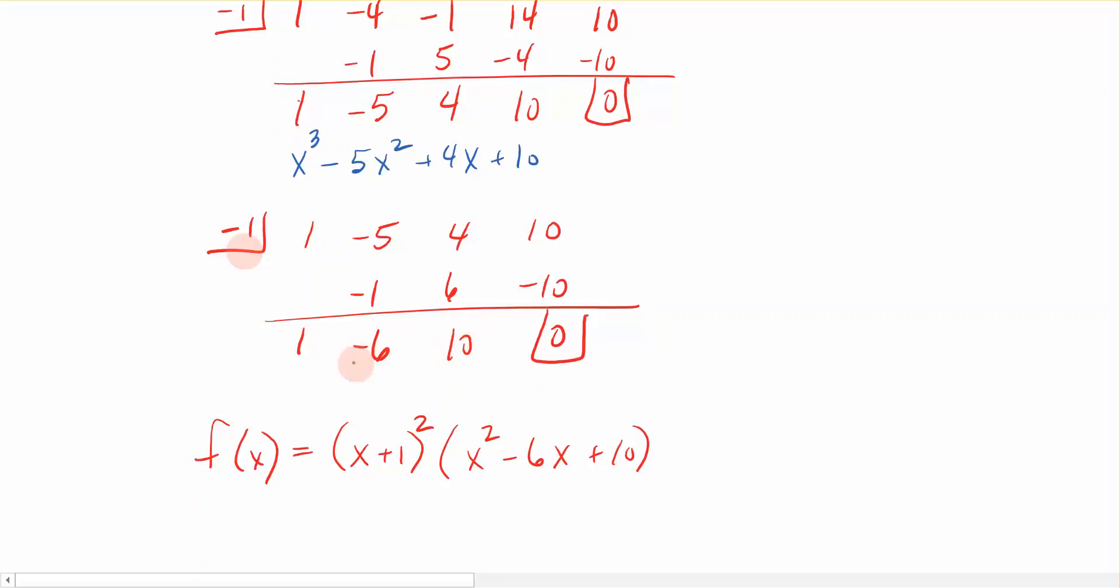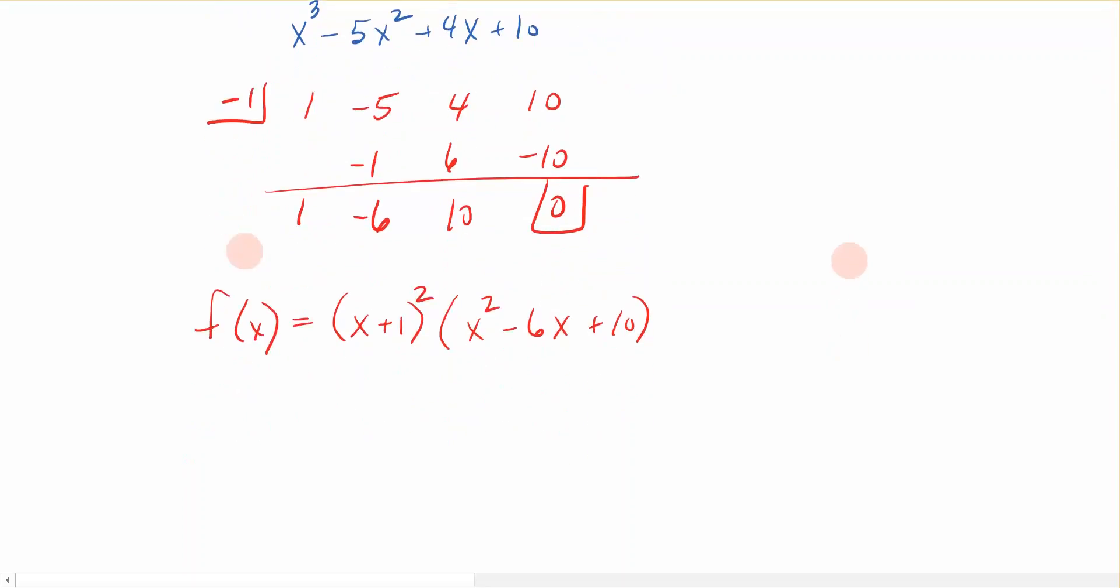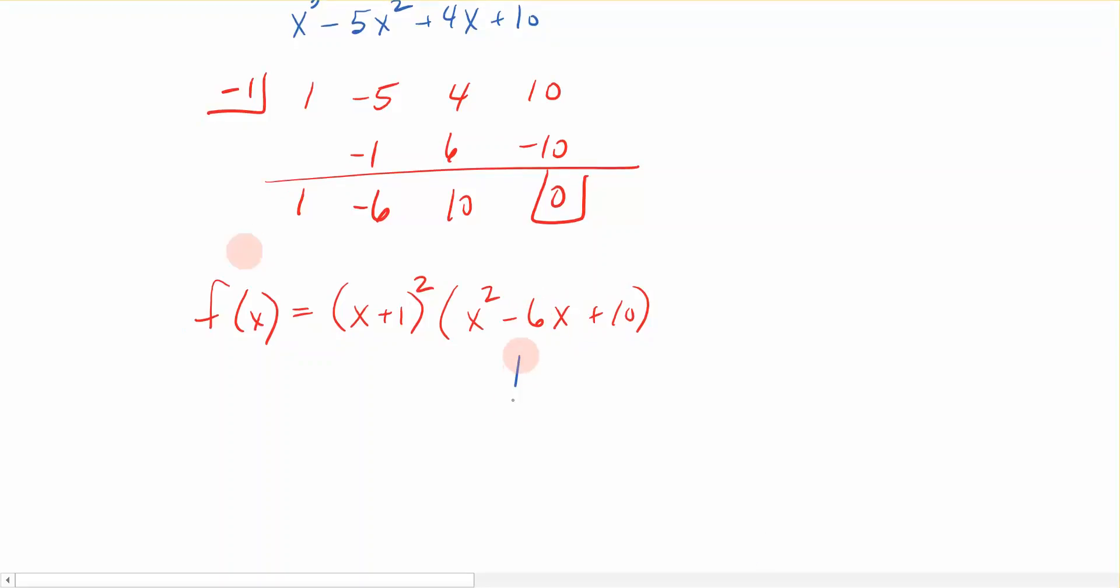Because this is a quadratic, I can either try to factor it or I can use the quadratic formula. Well, if I'm trying to factor this, I would be looking for the factors of 10 that add to give me 6. There are no factors of 10 that add to give me 6. So instead I'm going to have to use the quadratic formula. Quadratic formula says x is equal to negative b plus or minus the square root of b squared minus 4ac divided by 2a.